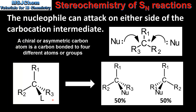In the reaction of a tertiary halogeno alkane with a chiral or asymmetric carbon atom, we can get two possible products which are known as enantiomers. Because the nucleophile can attack on either side of the carbocation, we get 50% of each enantiomer produced in the reaction.